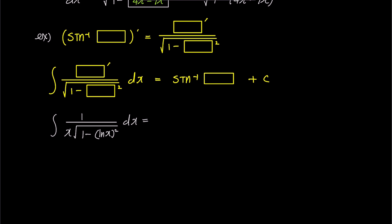What if we rewrite the expression as the integral of 1 over x over square root 1 minus ln x squared? Now, when we compare this to the previous yellow equation, it is evident that ln x goes into the box, and the numerator 1 over x is essentially the derivative of that box.